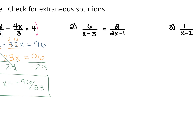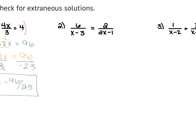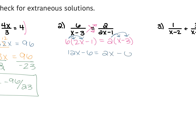For number 2, we are just going to cross multiply because we have a fraction equal to a fraction. So 6 over x minus 3 is equal to 2 over 2x minus 1. We are cross multiplying these, so we are going to do 6 times 2x minus 1 is equal to 2 times x minus 3. We're going to distribute the 6 in — that's going to give us 12x minus 6. Distribute the 2 in, that gives us 2x minus 6.